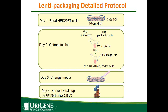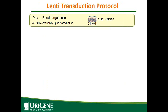Harvest the supernatant, do a brief spin to remove cell debris, and then filter the supernatant with a 0.45 µm filter. The virus is ready to use. For long-term storage, avoid repeated freeze-thaw cycles — aliquot the virus into small volumes and store at -80°C. If you want to measure viral titer, there are different methods; follow the corresponding protocols.